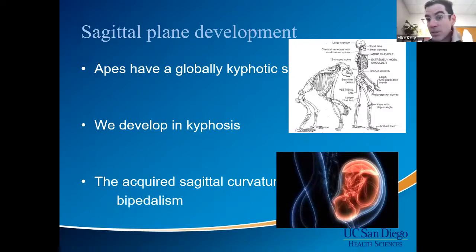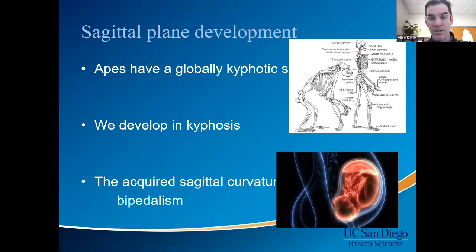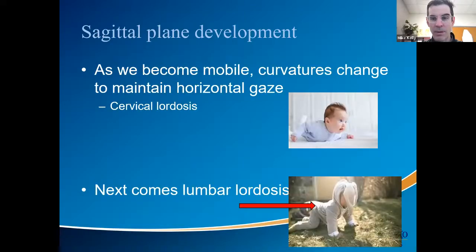Sagittal plane development: apes have a globally kyphotic spine. We differ from apes because we stand upright and walk erect. We develop in kyphosis in utero — everything is kyphotic: sacrum, lumbar spine, thoracic spine, and cervical spine. The acquired sagittal curvatures come with bipedalism. Trainees don't always know the pimp question that there are primary and acquired sagittal plane curvatures.